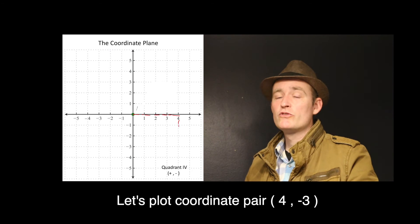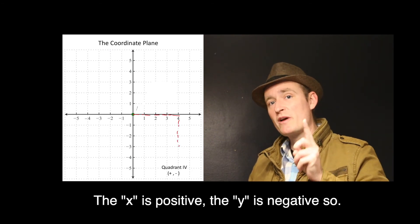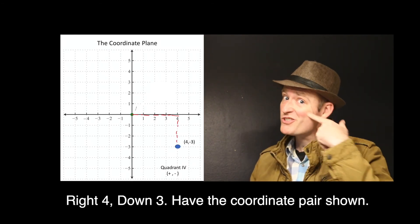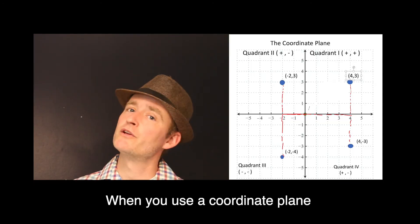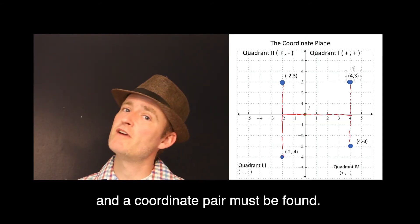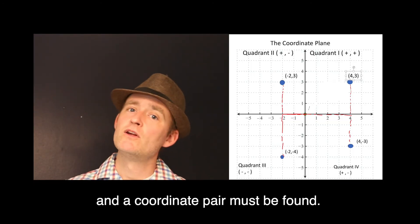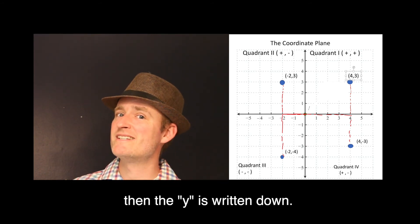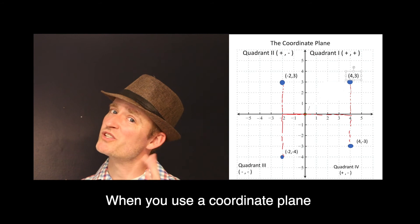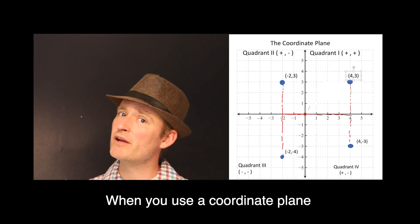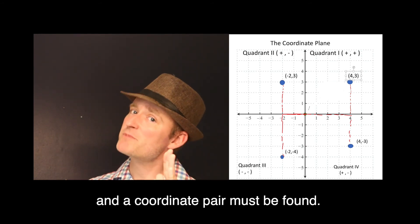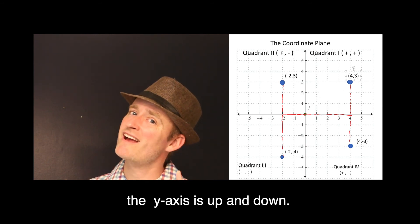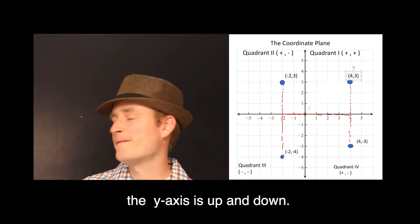Quadrant 4 is the last area we'll see. Let's plot the coordinate pair (4, -3): X is positive, Y is negative, so right 4, down 3 — there's the coordinate pair shown. When you use a coordinate plane, a coordinate pair must be found. X is first written down, then the Y is written down. X axis is left and right, and the Y axis is up and down.